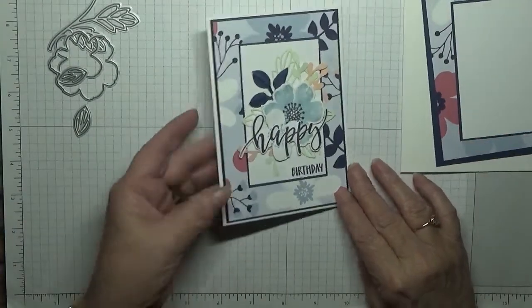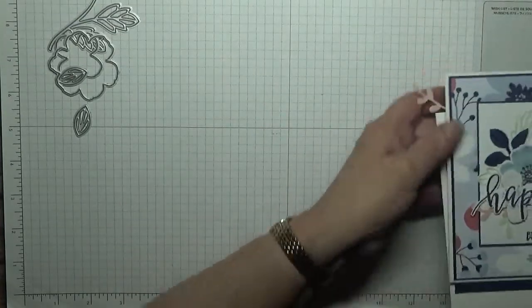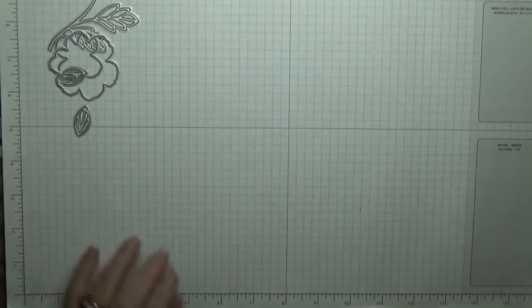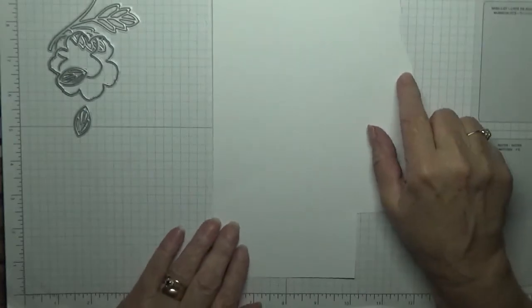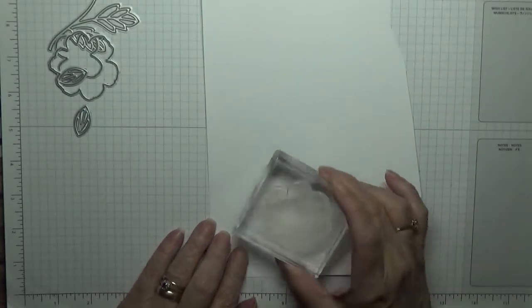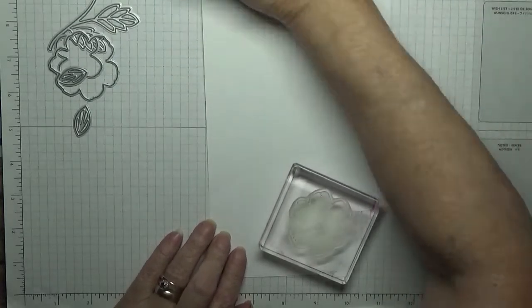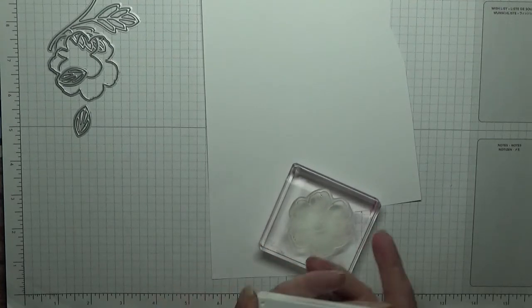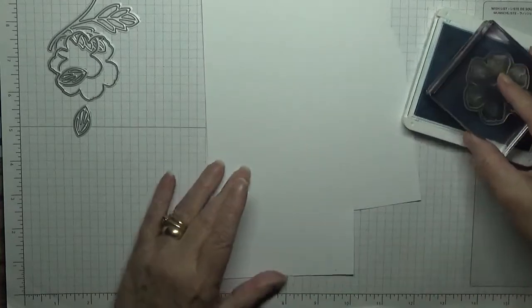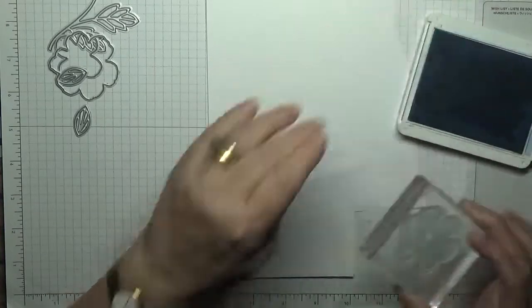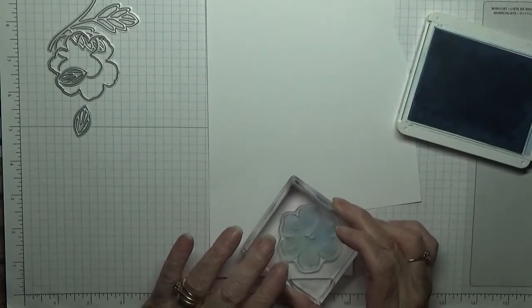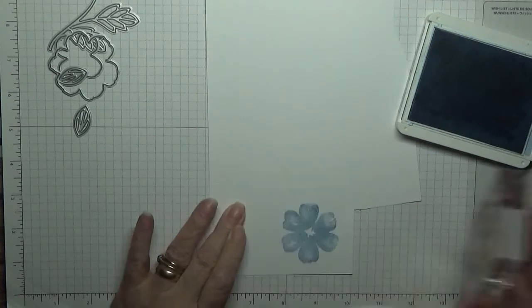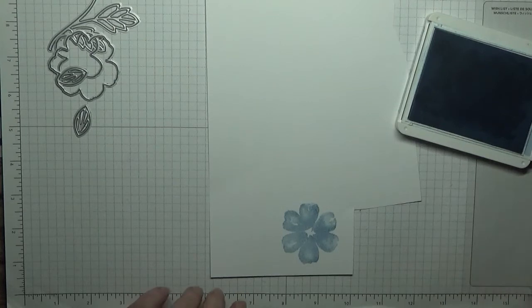Let's do some stamping first. I'll put that there so I can see what I'm doing. We need a scrap of white and we need to stamp this flower first in seaside spray. I'm still waiting on an order - today's date is the 7th of February.